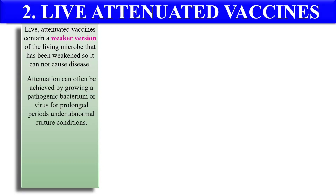How can we attenuate this pathogen? For attenuation, we generally force the pathogen to grow under abnormal conditions in culture. After a few years, that pathogen becomes able to grow under abnormal conditions but is no longer able to grow under the normal conditions inside the host. This means that after attenuation, the pathogen will not grow inside the host under normal conditions because it has become habitual to abnormal conditions. By this way, we can create attenuated vaccines.